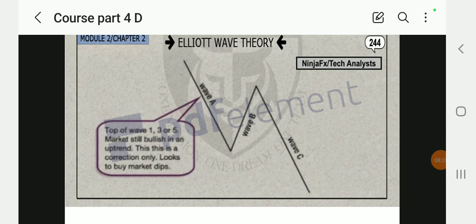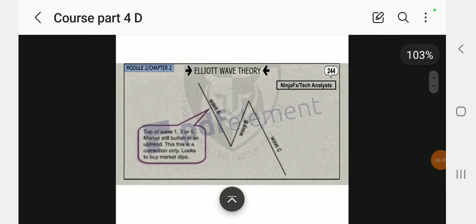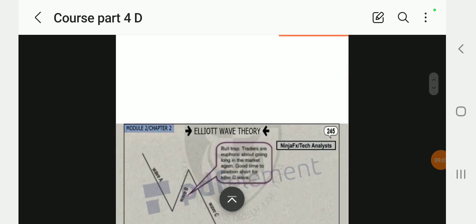Top of wave one, three, or five: market still bullish in an uptrend. This is a correction only, looks to buy market dips. You can see if you were looking for a buy, how the market would be structured. The market will be structured in a downtrend movement, but for us to buy, we'll have to first wait for reversal confirmation.